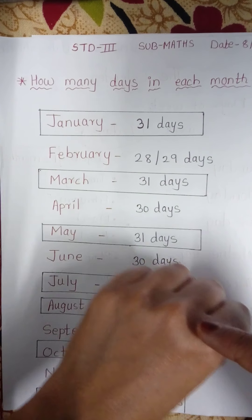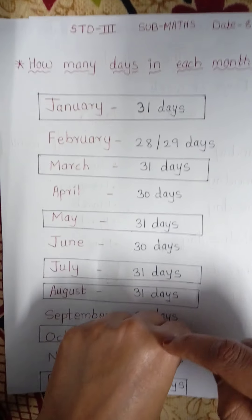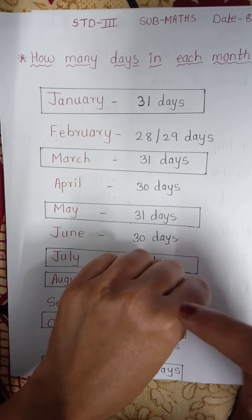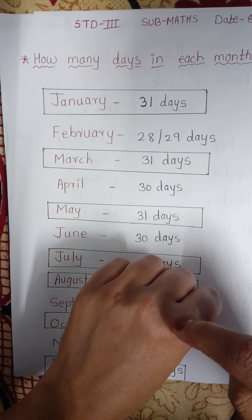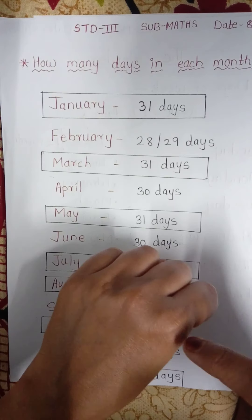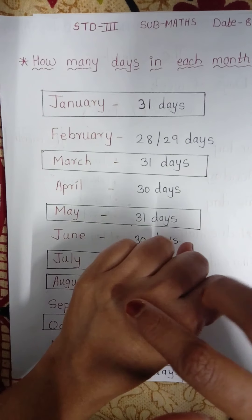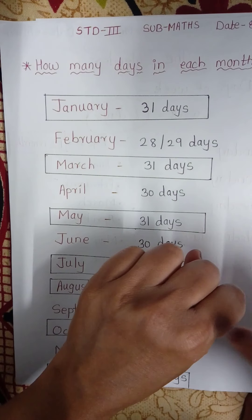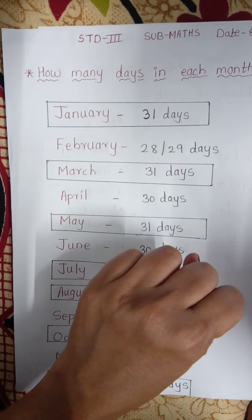Then after that, see August. In August also, how many days? 31 days. So like this you have to remember by using these bones. Thank you.